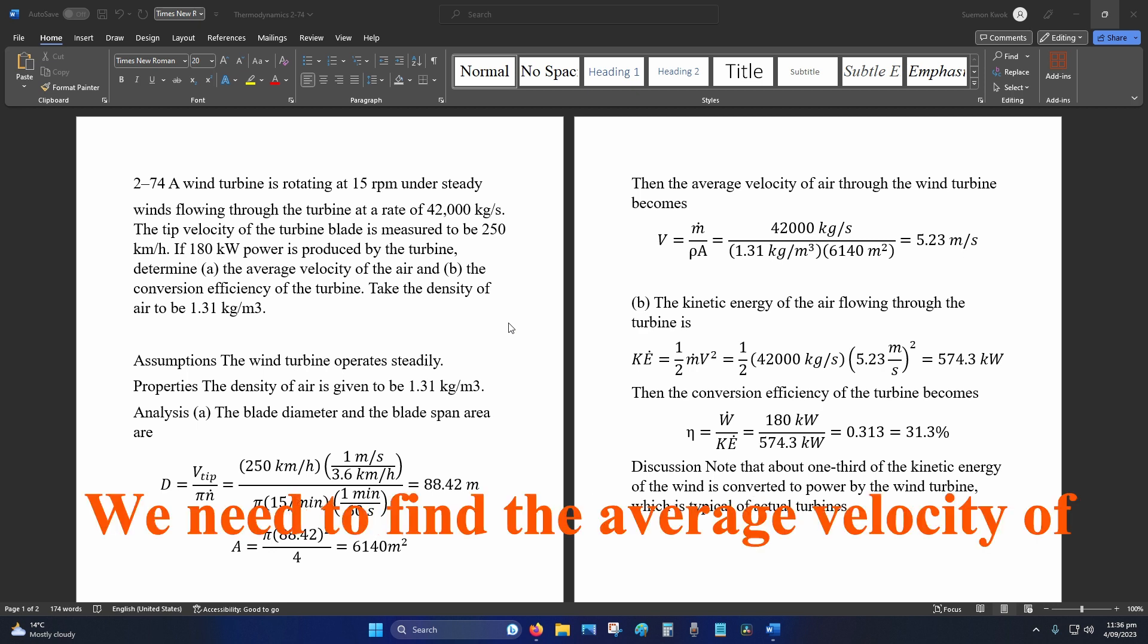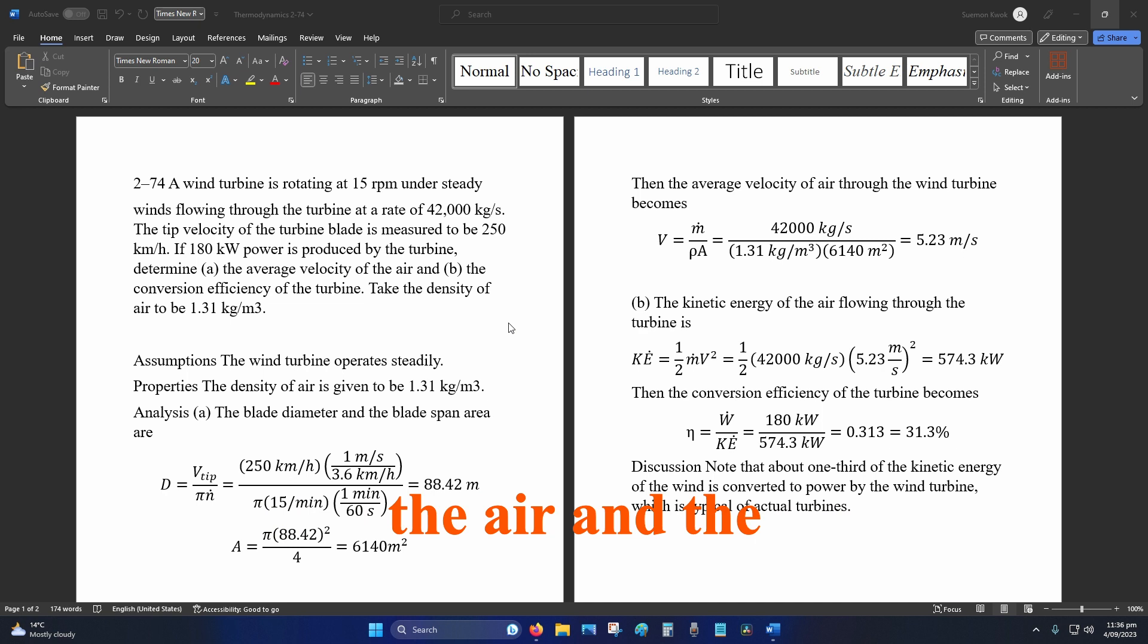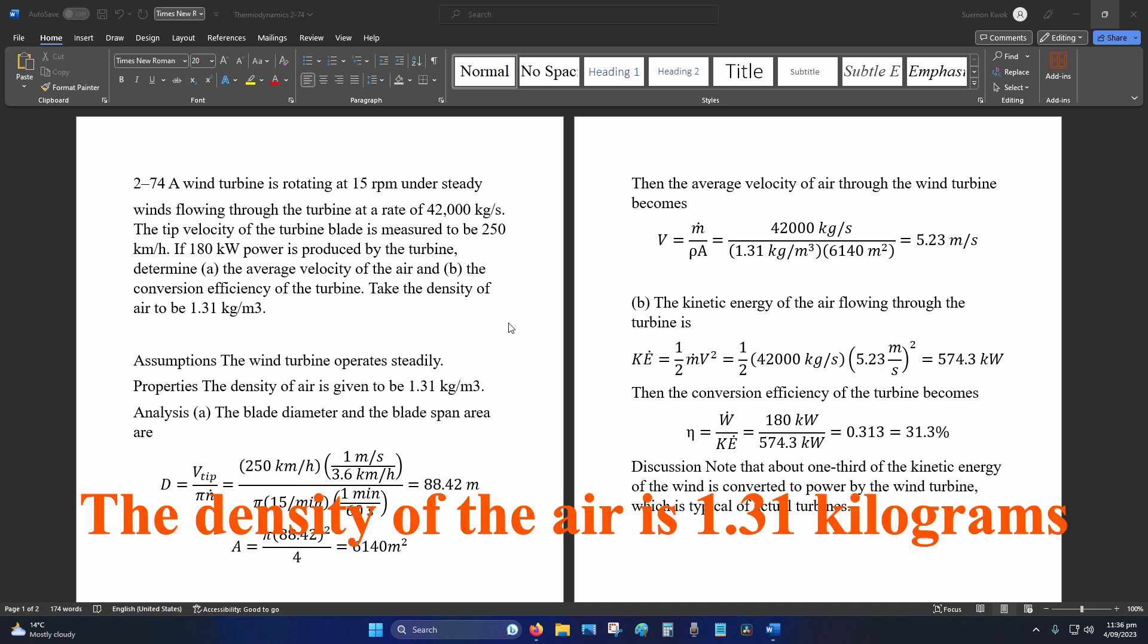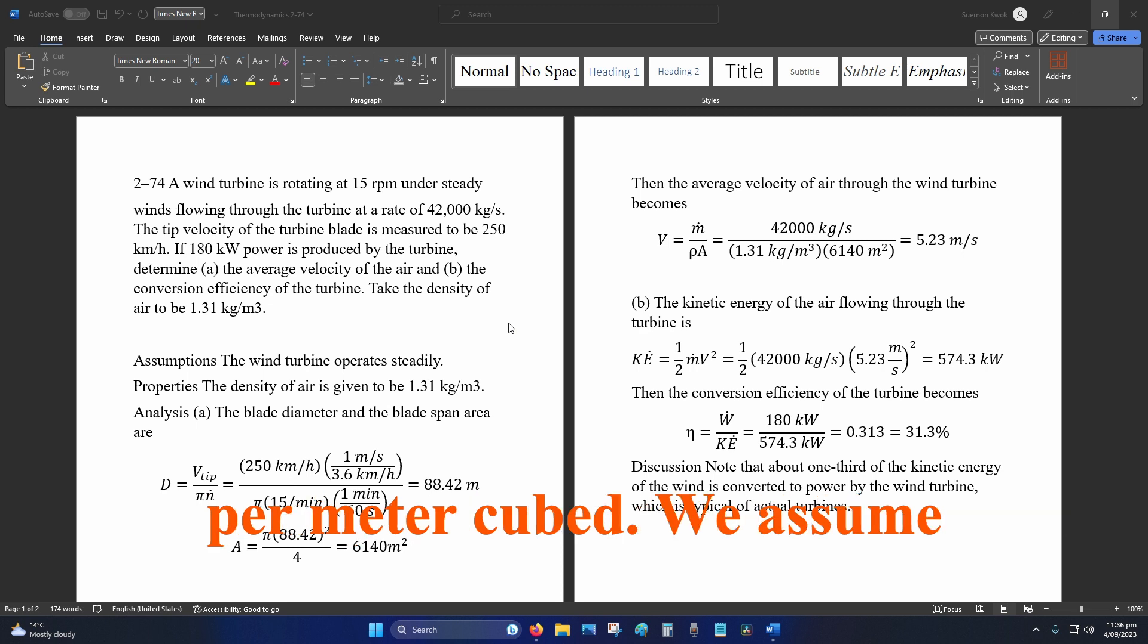We need to find the average velocity of the air and the efficiency of the turbine. The density of air is 1.31 kilograms per meter cubed. We assume the turbine operates steadily.